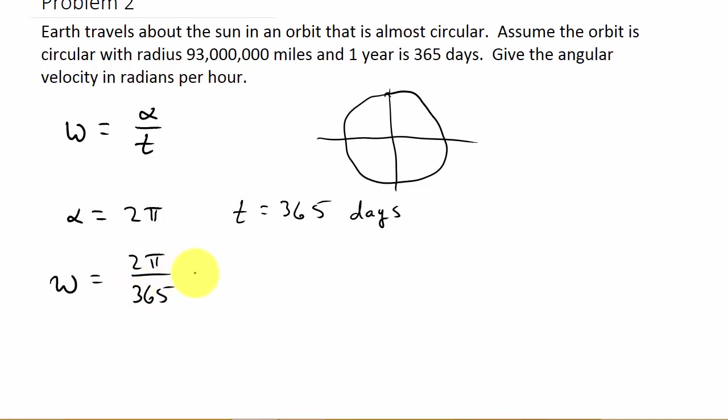So 2 pi over 365, I'm not going to reduce it just yet or get the decimal or anything. Now, the 2 pi over 365, that's what? That is radians per day, that's the angle radians per day. Well, what do we want? We want it in radians per hour.